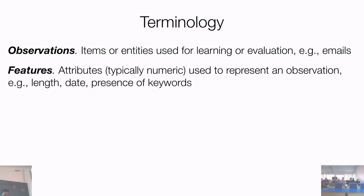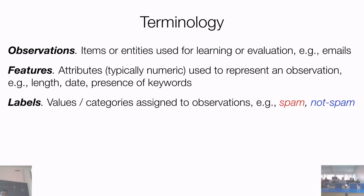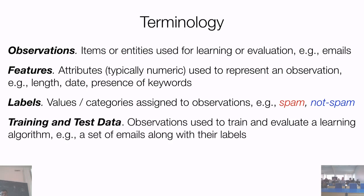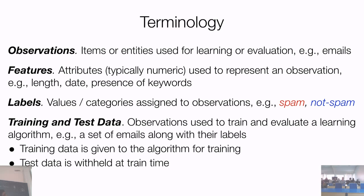Labels are values or categories assigned to observations — in spam detection, an email being spam or non-spam. Training and test datasets are the observations used to train and evaluate a learning algorithm. The training dataset is what we give the algorithm to train it. A test dataset is withheld at training time and subsequently used to evaluate the learned model.